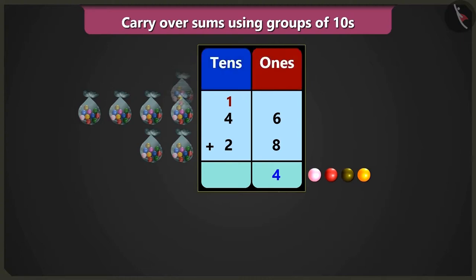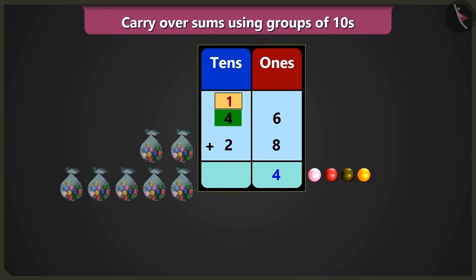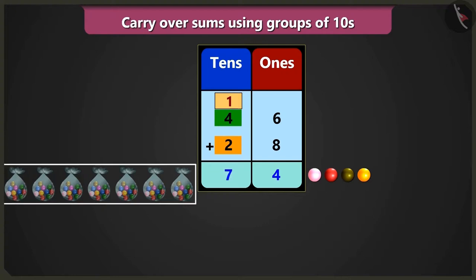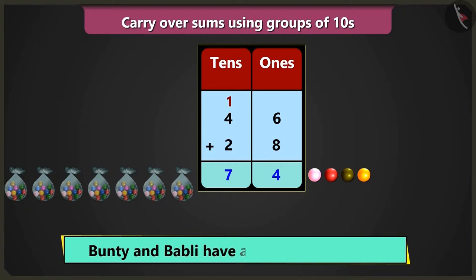Now, in the box of tens, adding 1 tens and 4 tens, we get 5 tens. And adding 5 tens and 2 tens will be 7 tens, that is 70. So now, we have a total of 7 tens and 4 ones, that is 74 marbles.